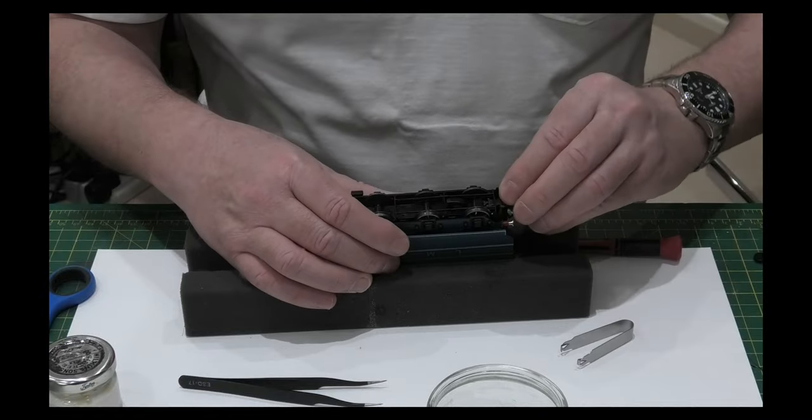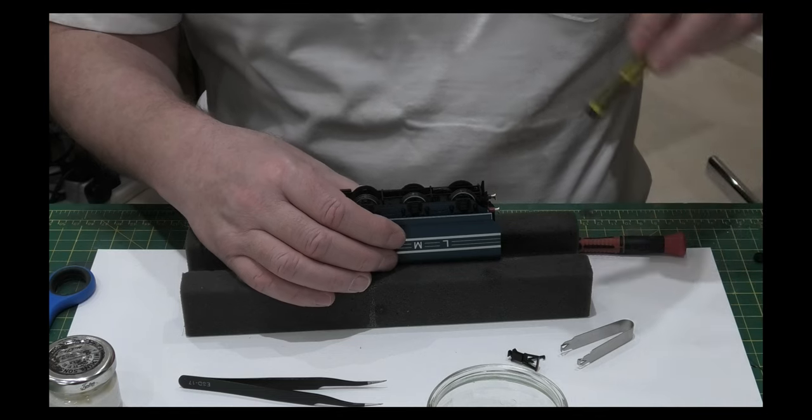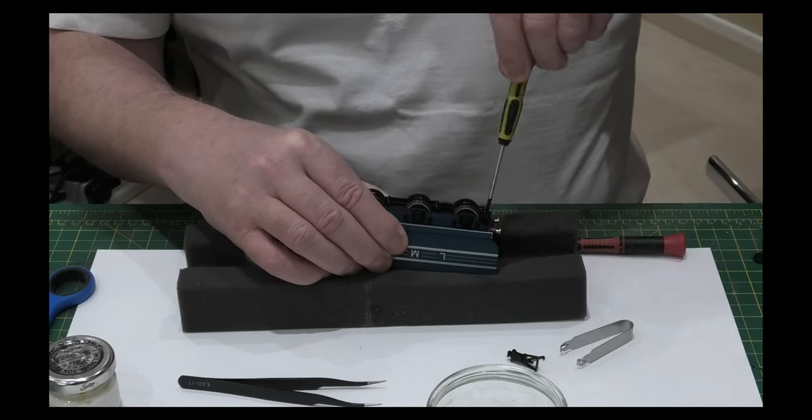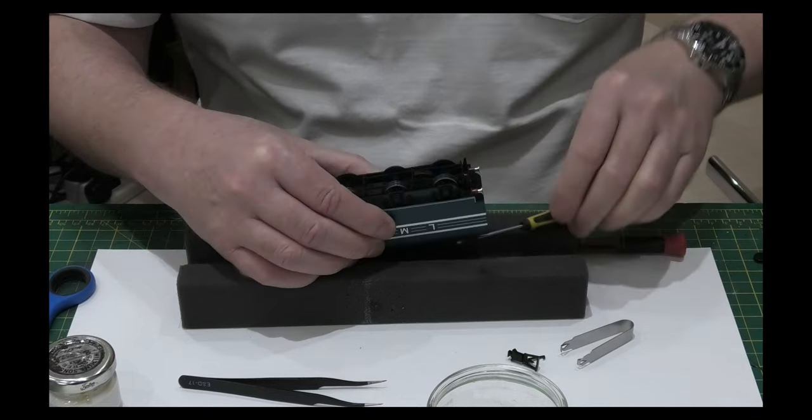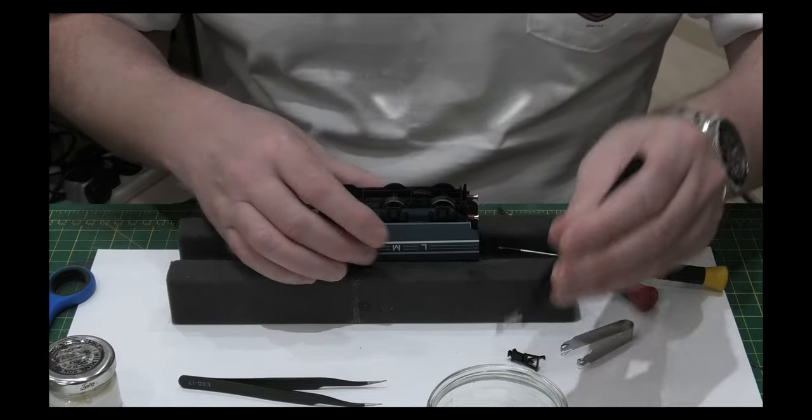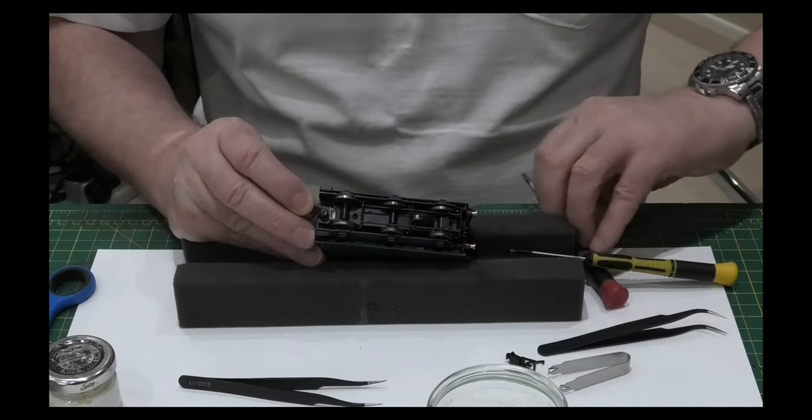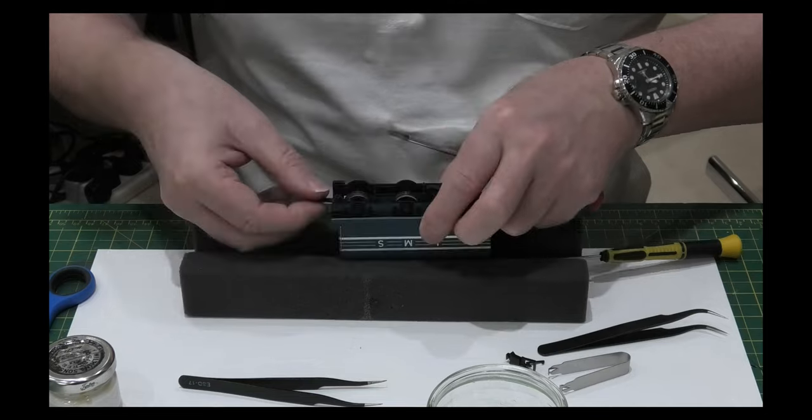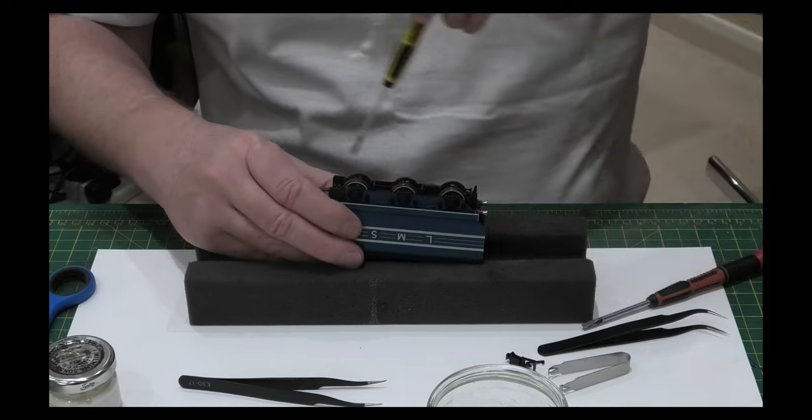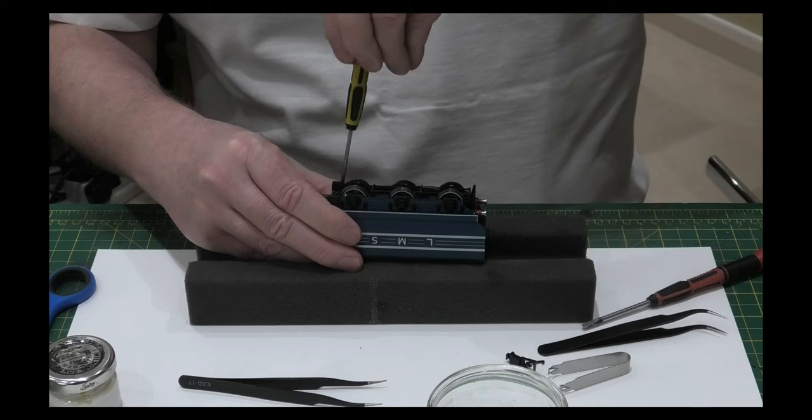The next thing you do is remove the coupling and you remove the tender. Take the tender apart which is a screw here which is easily done. It's got two phillips screws in the base here, take those out.